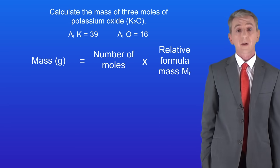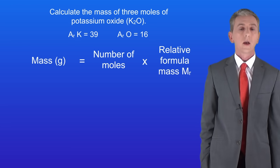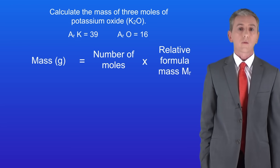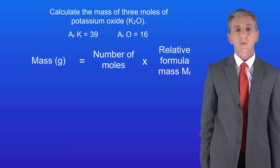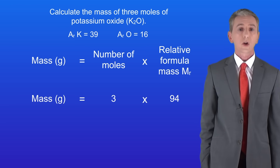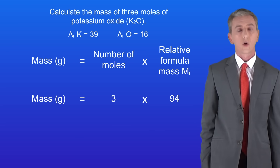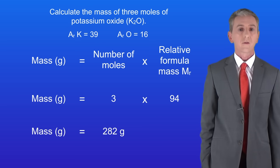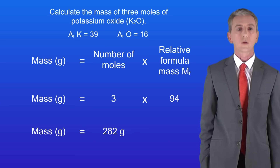Now we can go back to our equation. We've got to calculate the mass of three moles of potassium oxide, so we multiply the number of moles by the relative formula mass. This gives us a final mass of 282 grams.